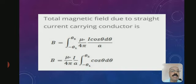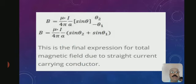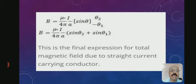Rearranging mathematically, we get B = (μ₀·I) / (4π·A) · [sin(θ)] evaluated from -θ₁ to θ₂. The final expression for the total magnetic field due to a straight current-carrying conductor is: B = (μ₀ / 4π) · (I/A) · (sin(θ₂) + sin(θ₁)).